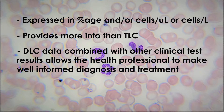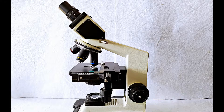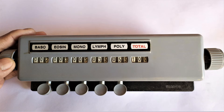The DLC procedure is a pretty simple process and can be performed in a modest lab setting. All that is required to perform a DLC are a compound light microscope and a thin stained peripheral blood smear of the patient's blood sample, along with a pen and paper. Additionally, a blood cell counter may be used if available.